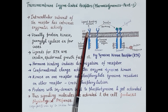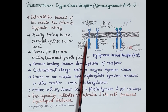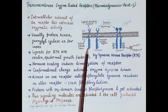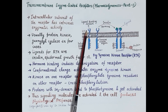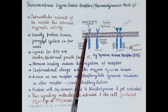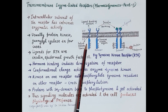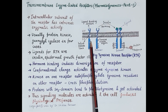This is the extracellular domain of the receptor, which is present outside the cell membrane, and this is the intracellular domain of the receptor, which is present inside the cell. This receptor has an extracellular ligand-binding domain, which is connected through a helical peptide chain to an intracellular subunit.